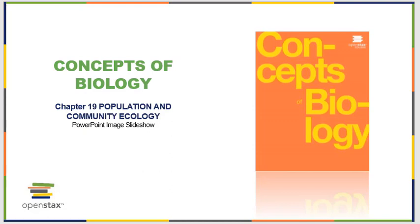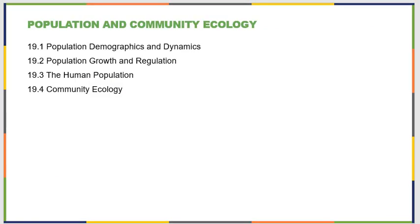Concepts of Biology, Chapter 19: Population and Community Ecology. The first two sections of this chapter are about population ecology. We talk a little bit about the human population, and then there's a last extended section on community ecology.